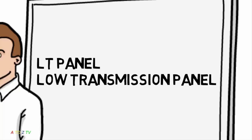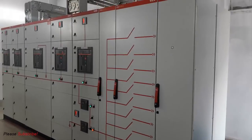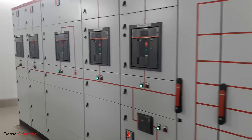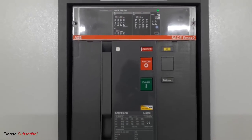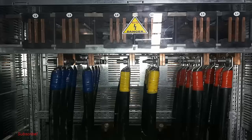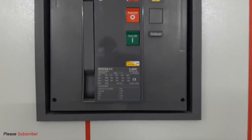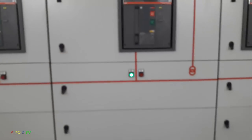This is our LT panel which is imported from Turkey, and it has five ACBs as I mentioned in my last video. First of all, there is the incoming ACB which has an ampere rating of 6300 ampere. This is our incoming ACB and this is our incoming connection which is connected with the common busbar — we use 500 mm² cable. The ACB is like low-transmission switchgear because it only operates below 450 volts.